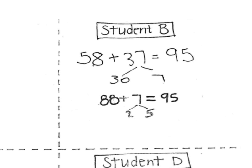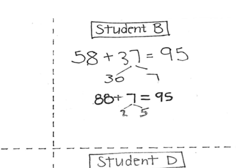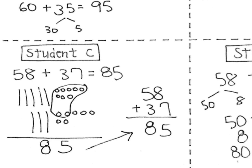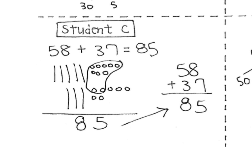B right here, again we're decomposing, but we're not really decomposing to make a 10. Now we're just decomposing into tens and ones, and then adding the 58 plus the 30 to get 88, and then we're adding in the remaining 7. So that's another strategy.